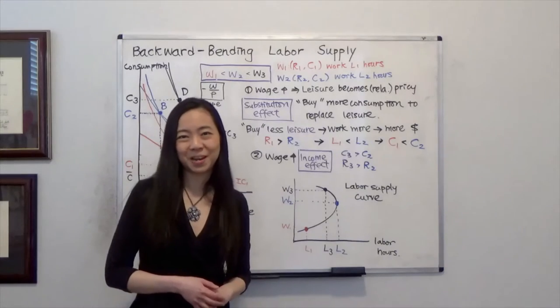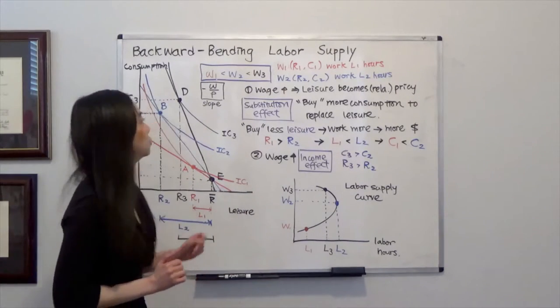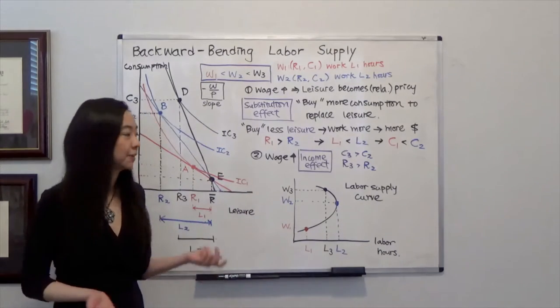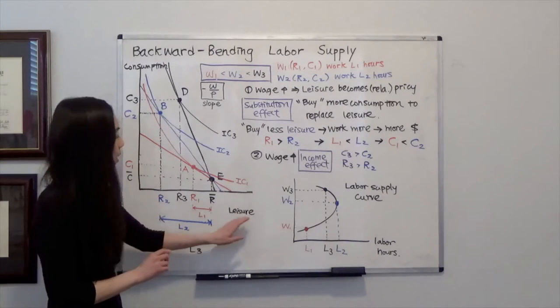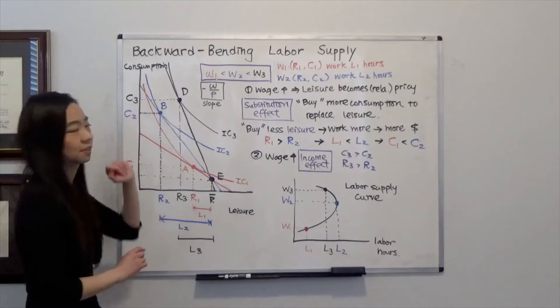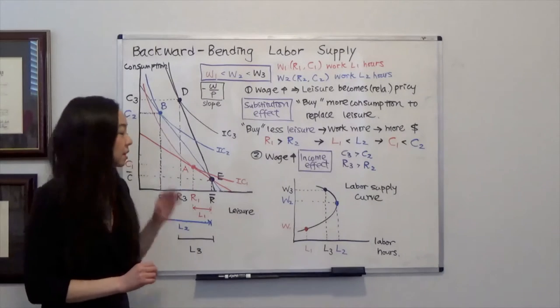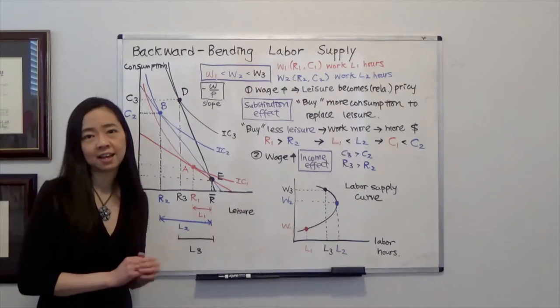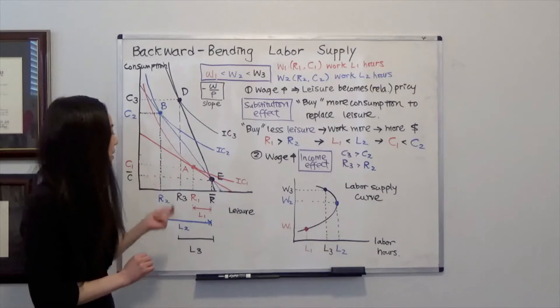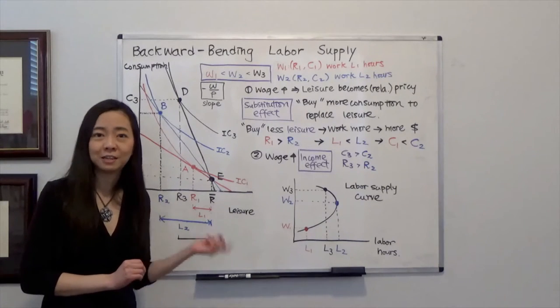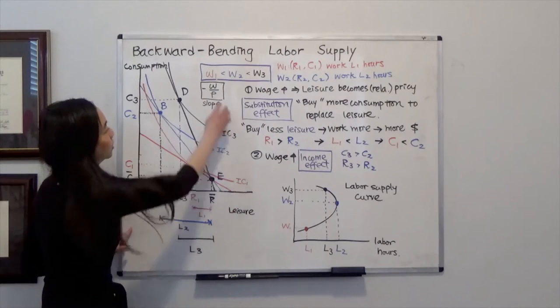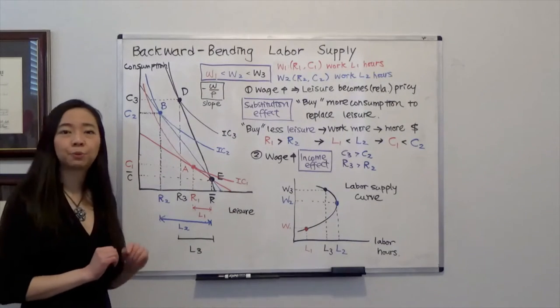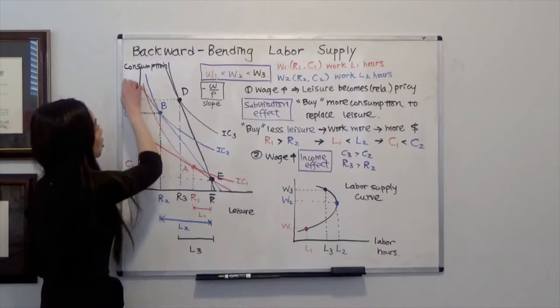So we're going to continue with our scenario from last time in Varian's book, where we have two things we like to consume. One is leisure, and one is consumption. Remember, the cost of leisure is exactly your wage, because when each hour you spend on leisure, you will have to give up your wage. So that's the price of wage, that's W, and the price of consumption is normalized to P.